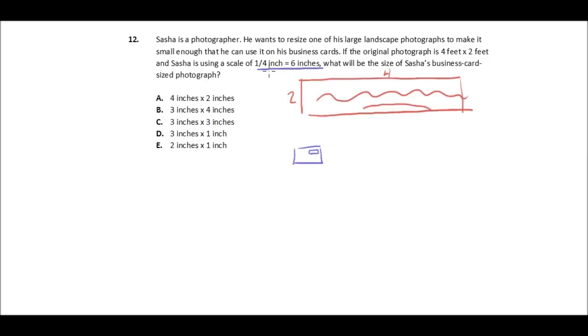Well, that means that the smaller photograph will have 1 quarter inch for every 6 inches of the larger photograph. So 1 quarter inch to 6 inches, that's the ratio. All right, well, so how do we get there?